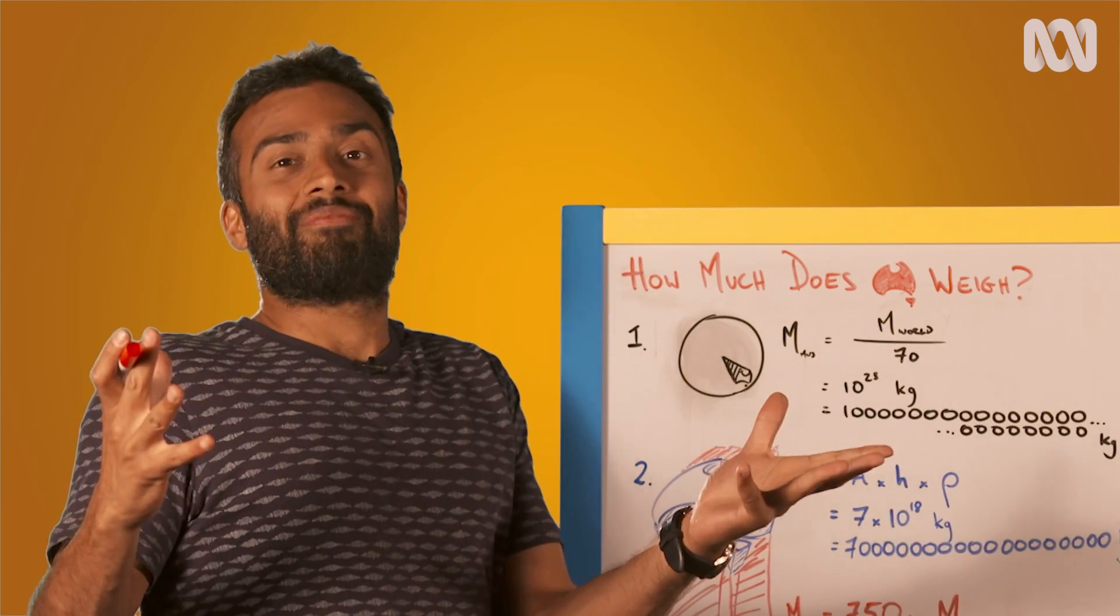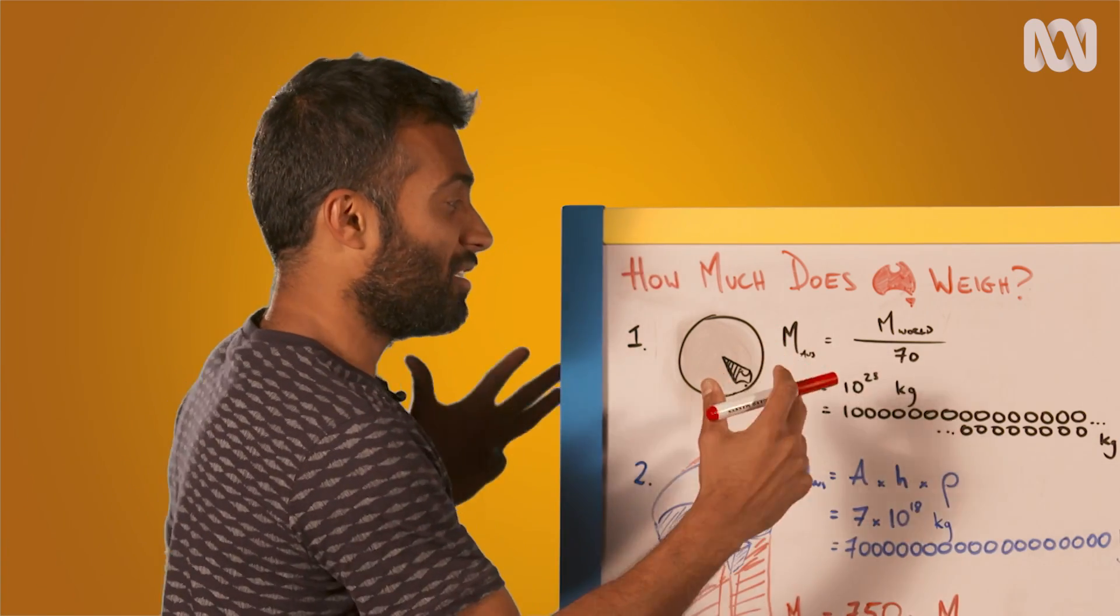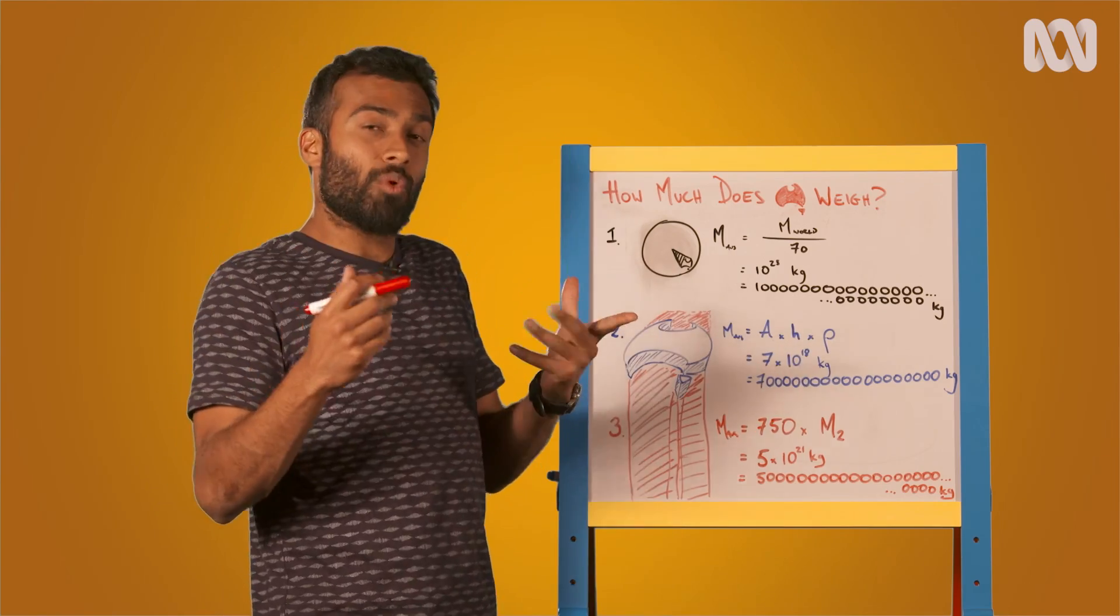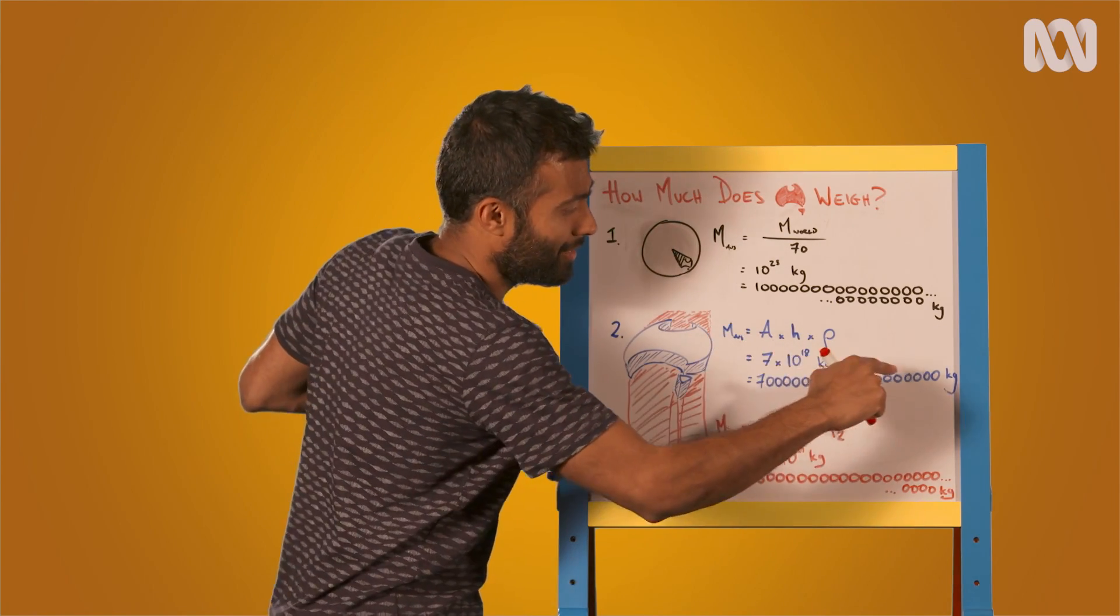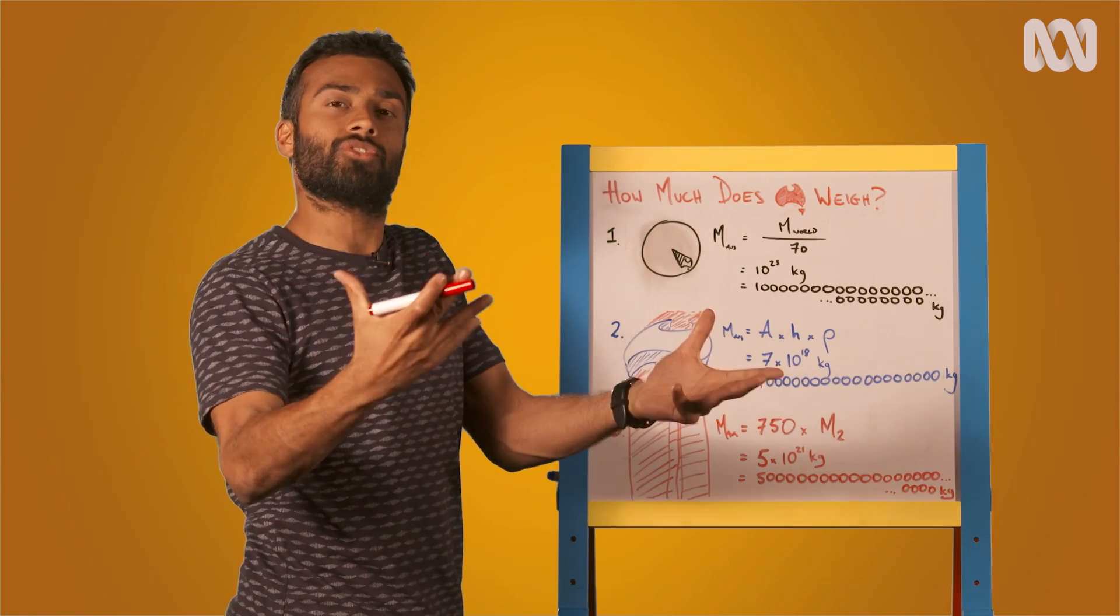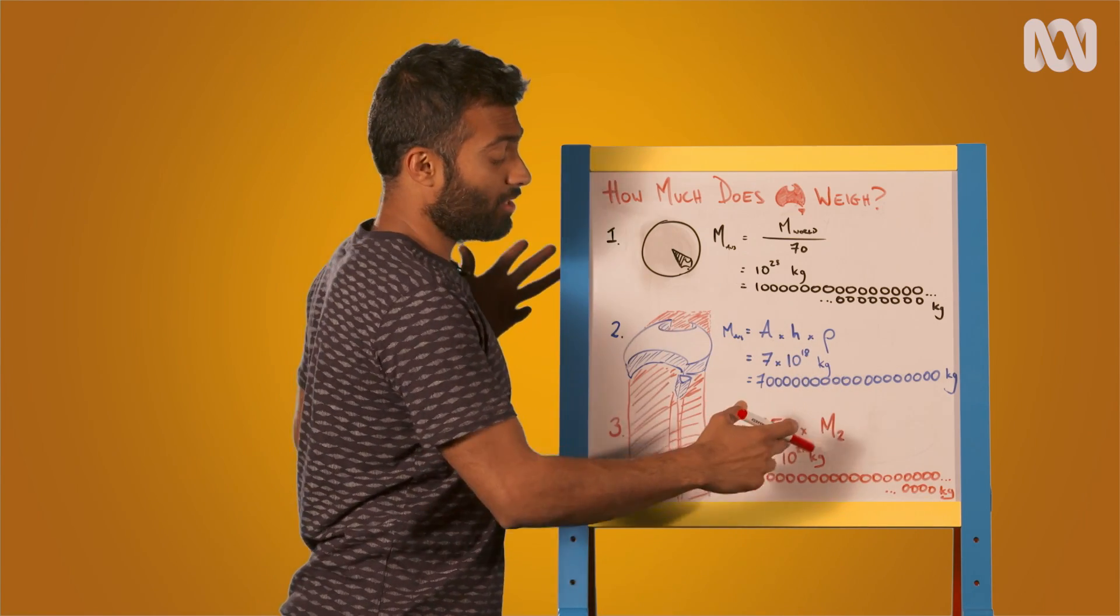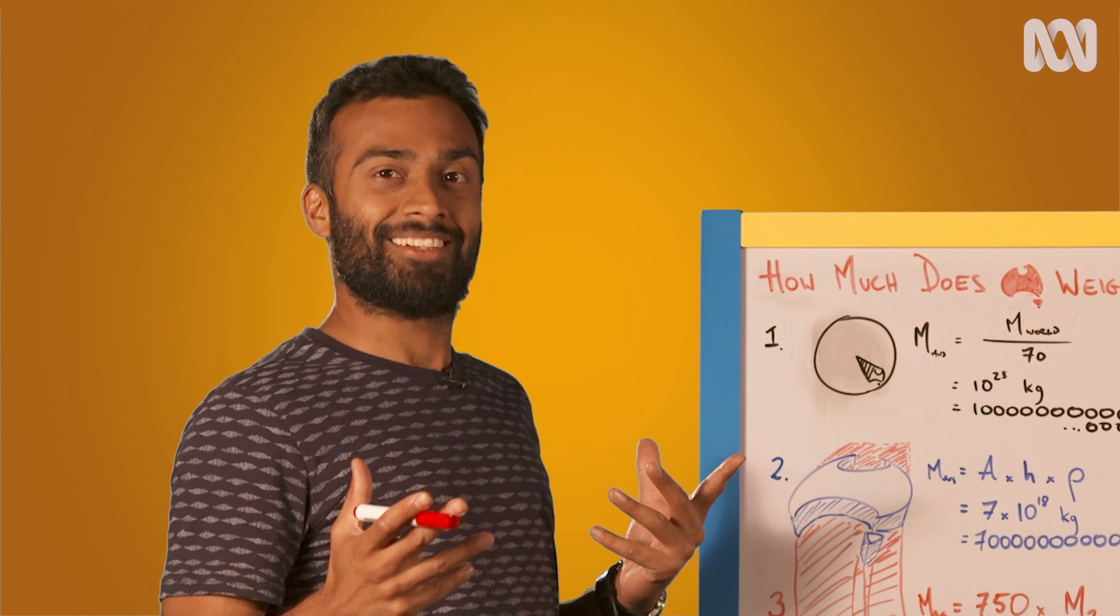So there we have it. The Australian portion of the world is about 1/70th the mass of the world, about 10 to the 23 kilograms. The Australia that we see is 1/10,000th of this, around 7 by 10 to the 18 kilograms. And the mass of the entire landmass that moves together as Australia is around 750 times this mass, about 5 times 10 to the 21 kilograms. That's the weight of Australia. Geologists rock.